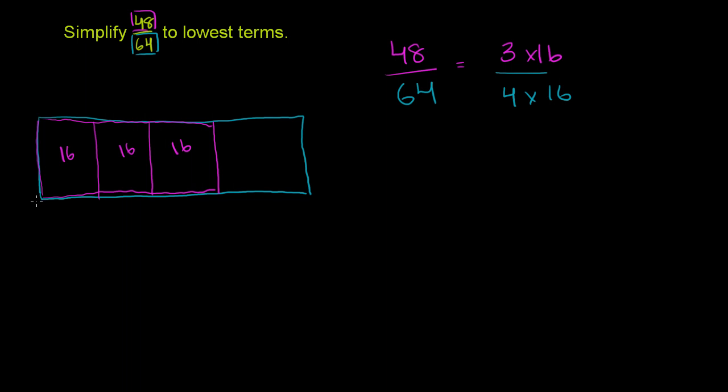Now, 64 is 4 groups of 16. So we could make, if you look at the 64, that is a 16, that is a 16, that is a 16, and then that is another 16. These should all be the same length. I drew it a little bit off.